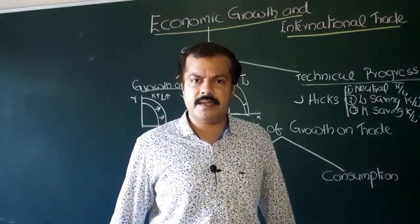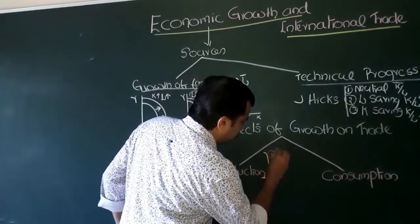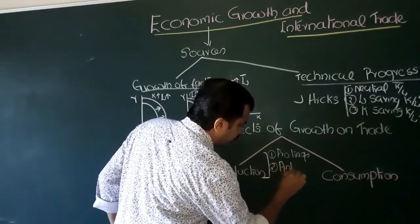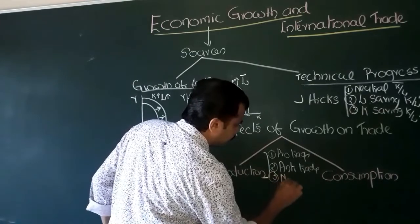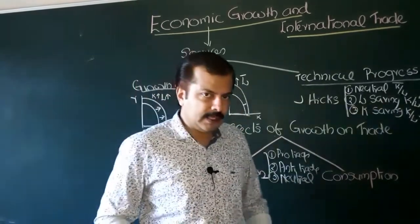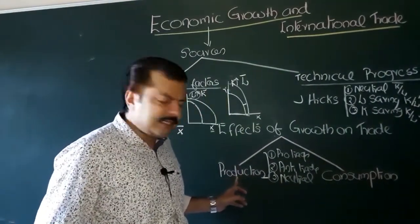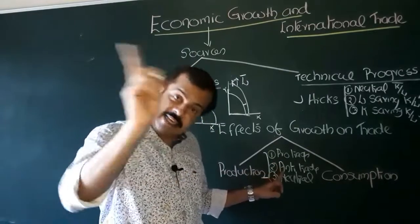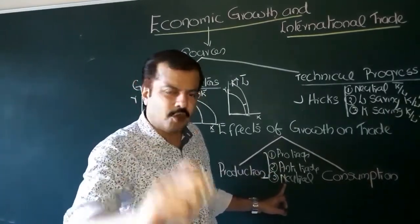We have to explore what happens to production when a country experiences economic growth. Production can be pro-trade, it can be anti-trade, or it can have a neutral impact. As a result of economic growth, there will be changes in output and these changes can be in favour of trade, against trade, or have a neutral or balancing effect.